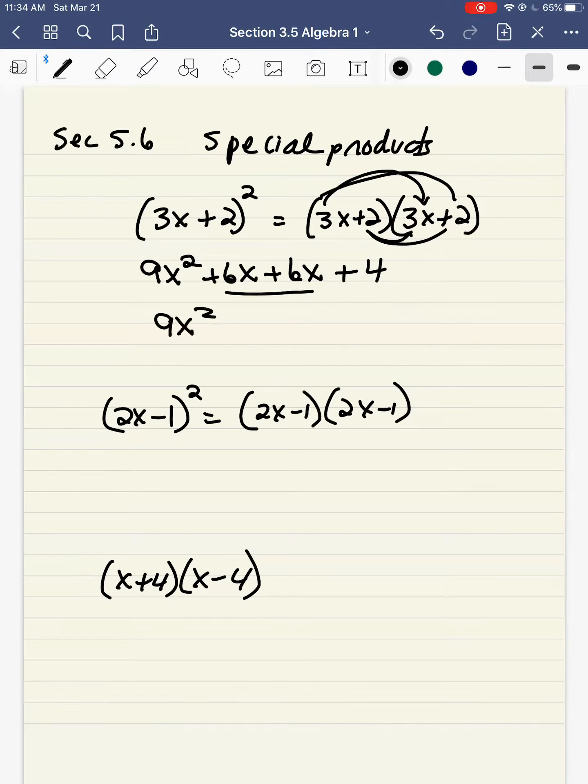Combining the middle terms, I get 9x squared. 6 and 6 is 12, so that's 12x plus 4 for the final answer.